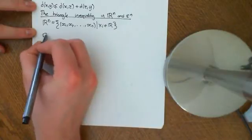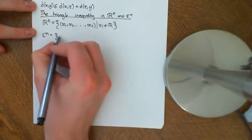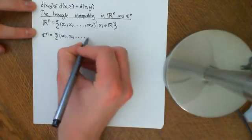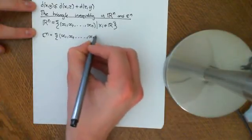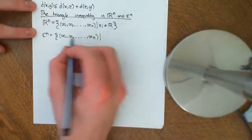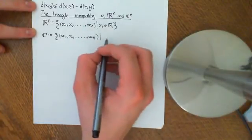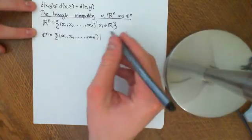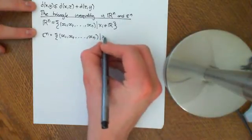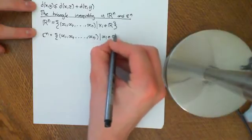And C^n is exactly the same, but the elements are complex numbers. So we have (x₁, x₂, all the way up to xₙ). So you could think of these as finite versions of the Lp spaces. Remember, the Lp spaces were these ones where you went off to infinity. And xᵢ are all elements of the complex numbers here.